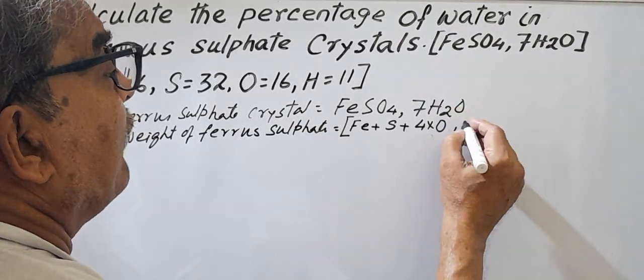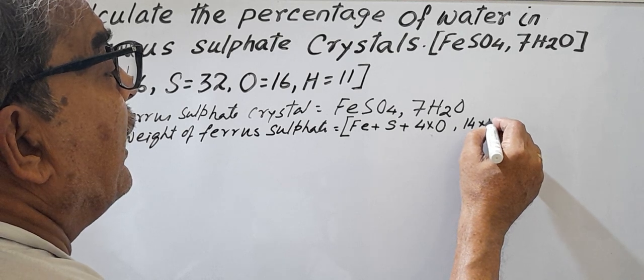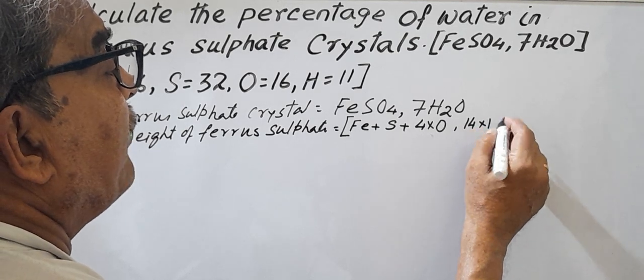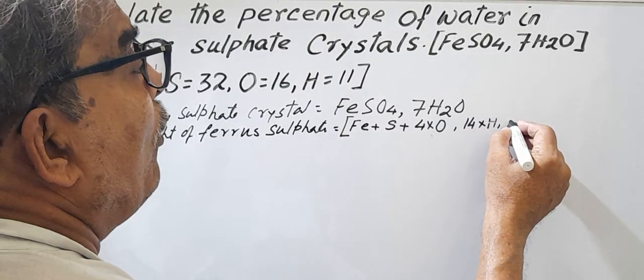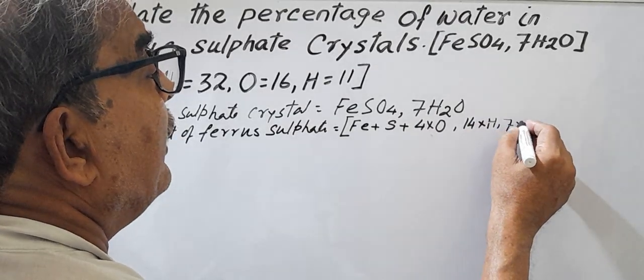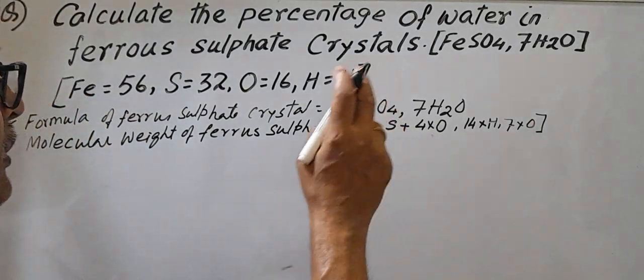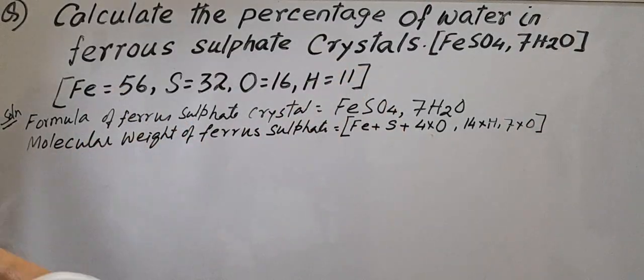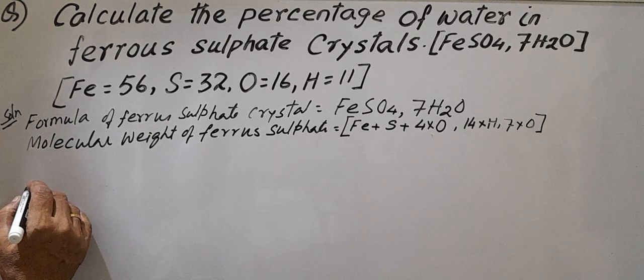14 into 1, H is 1, again O, 7 O. The value: Fe is 56, it is given here. So molecular weight of seven molecules of water.